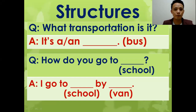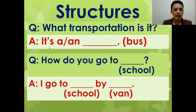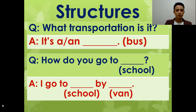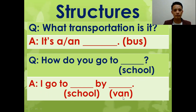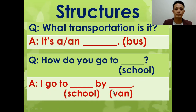Let's study the structures. I have prepared three structures for you to practice. First structure: 'What transportation is it?' The answer would be 'It's a...' or 'It's an...' — for example, 'It's a bus,' 'It's an airplane.' Second structure: 'How do you go to [place]?' For example, 'How do you go to school?' Answer: 'I go to school by van.' Another example: 'How do you go to the market? I go to the market by boat or by bicycle.'